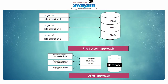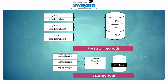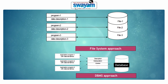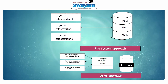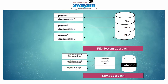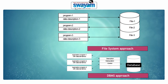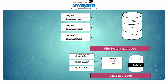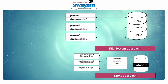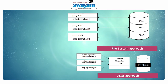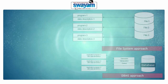In diagram one, you can see that program one, data description one; program two, data description two; program three, data description three — they are written separately and stored separately in file one, file two, and file three. In the second approach, the database approach, you can see application programs with data semantics. Application program one, two, and three can store data in one place and it can be shareable.